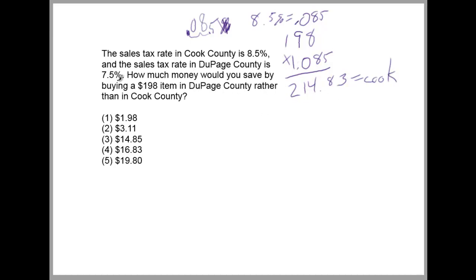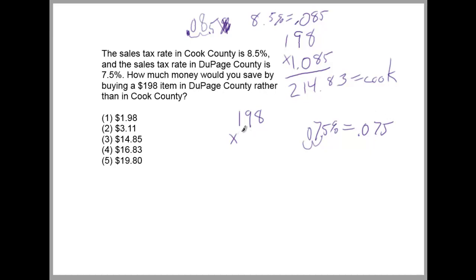Now for DuPage County, the tax is 7.5%, so you do the same thing. Multiply 198 times the converted decimal. 7.5% equals 0.075 — move the decimal two spaces to the left. And add the 1 before the decimal to get the total cost, since the 1 factors in the original item cost: 1.075. So 198 times 1.075 equals $212.85.